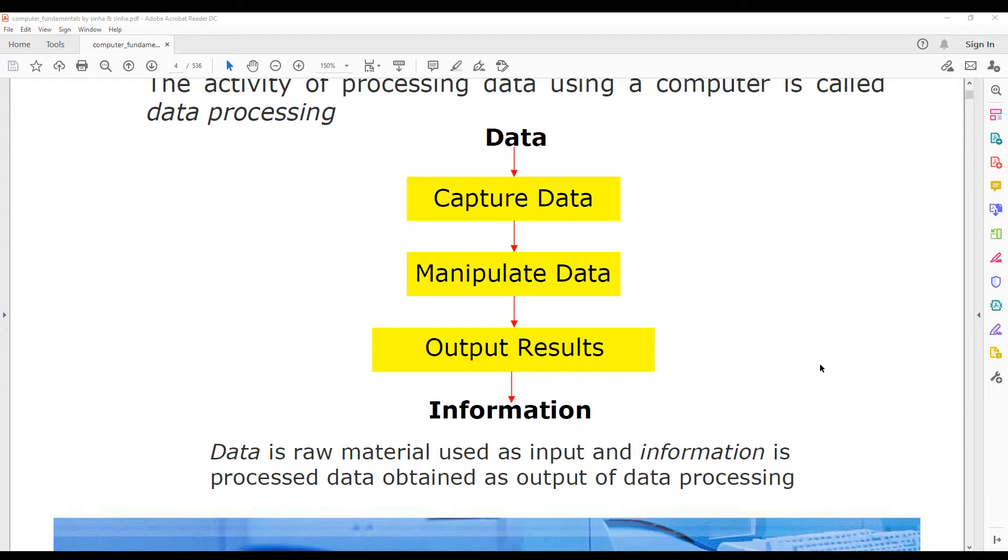So data is basically a raw material which we have used as input and information is processed data obtained as output of data processing. So whenever we get some output from computer this is basically the information. Information is processed data.